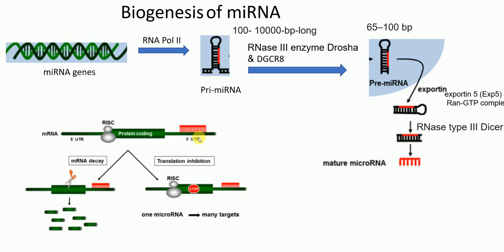The guide micro RNA binds to the target mRNA at its 3' untranslated region, guiding the RISC complex to the target mRNA so it can perform its function. Two things can happen: mRNA decay or translation inhibition. If the guide RNA has perfect complementarity to the target mRNA, the RISC complex — specifically the Argonaute protein — will cleave the protein-coding part of the target mRNA into small pieces for further degradation, resulting in mRNA decay.